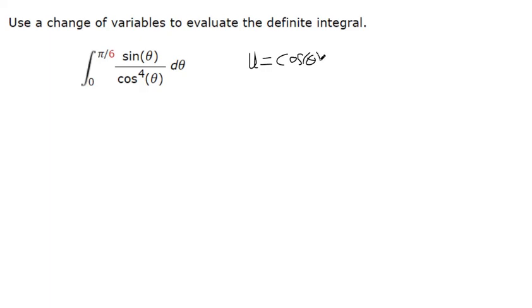And if that works, then I need to have du as well. So the derivative of cosine is negative sine. So I almost have that. It's negative sine theta. I have positive sine theta, so I can get negative sine theta by factoring out a negative one.